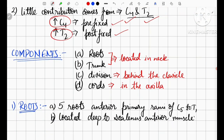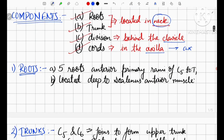Like a tree, the brachial plexus also has four components: root, trunk, division, and cord. Root and trunk are located in the neck — we will discuss these in the head and neck topic. Division is behind the clavicle, and the cord is present in the axilla in relation with the axillary artery.